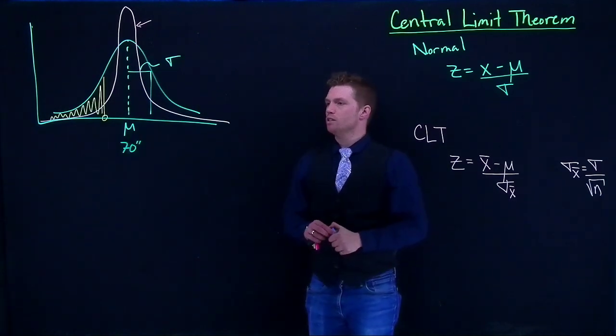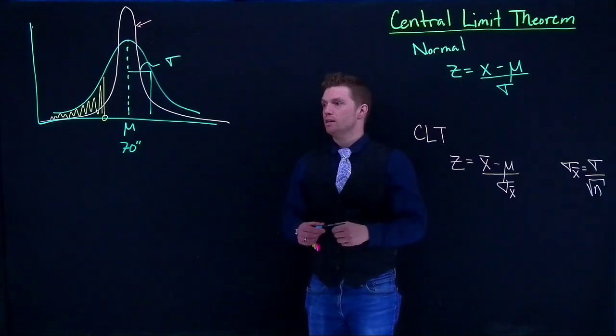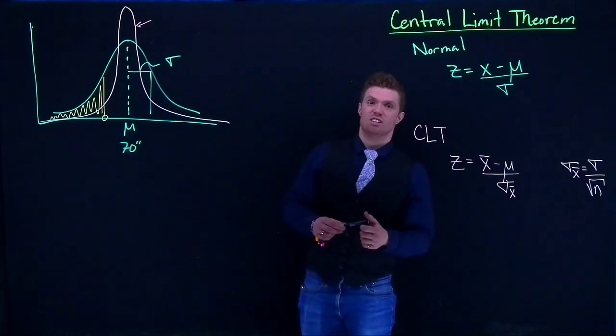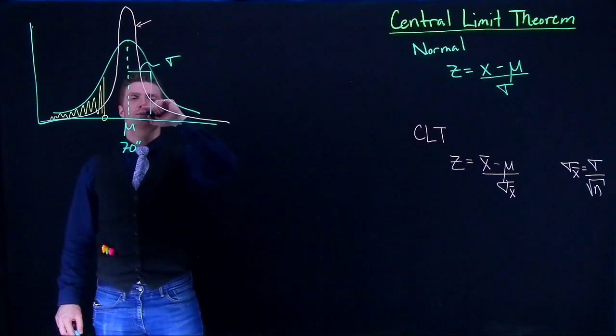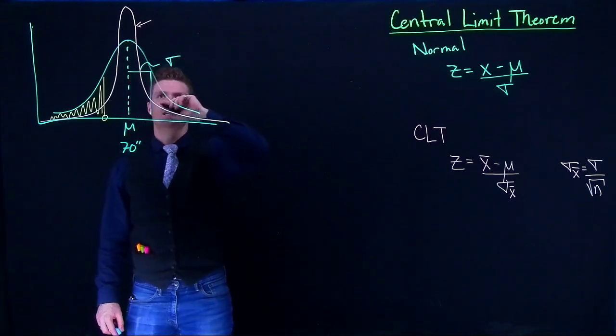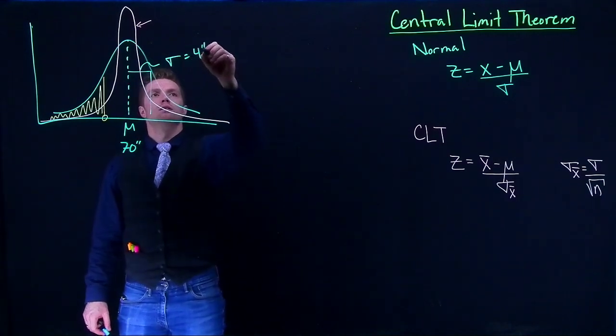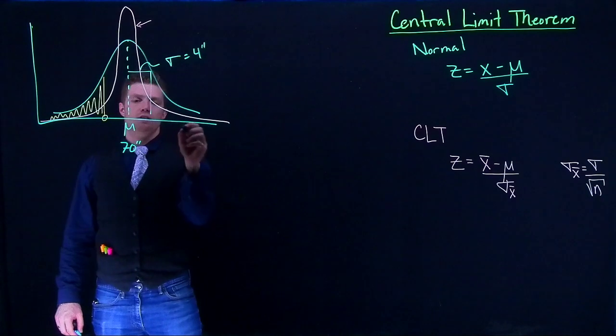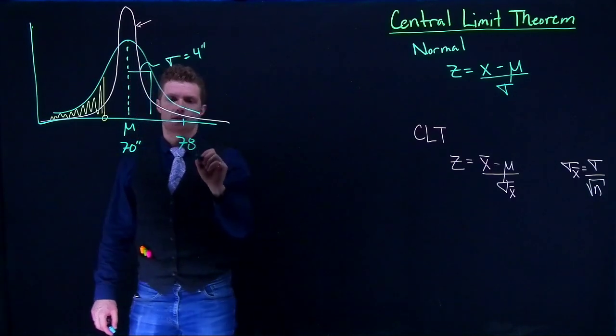Let's say that we're talking about somebody who's particularly tall. Let's say 6 foot 6. So that would give us up to 78 inches. And we'll suppose that the standard deviation is 4 inches. And so we'd say that we're up here if we hit 78.